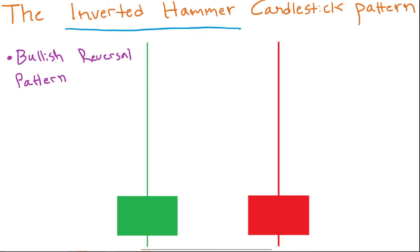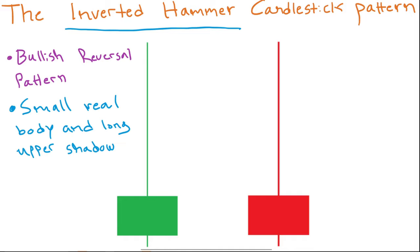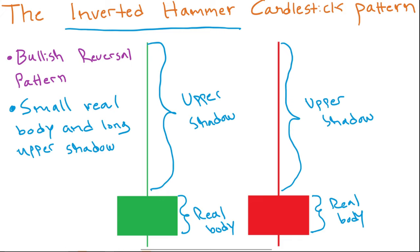How do we actually identify the inverted hammer? The inverted hammer should have a small real body and a long upper shadow. The real body is the wide part of the candle, and the upper shadow is the line above the real body. In this illustrative example we also have a small lower shadow, and that is another criteria: the lower shadow should either be very small or not there at all.